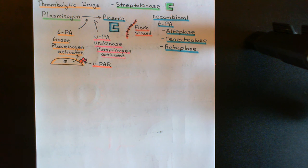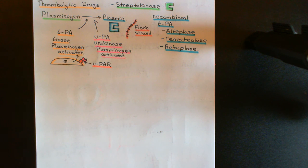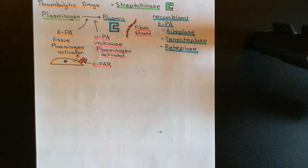Those thrombolytic drugs can be given by intravenous injection to someone suffering from an acute coronary syndrome in order to lyse the blood clot and therefore restore blood flow back to the area supplied by that coronary artery. Those are the treatments that can be considered if someone is actually having an acute coronary syndrome and you need to restore blood flow to the ischaemic portion of myocardium.